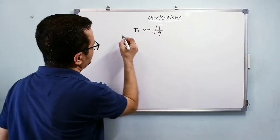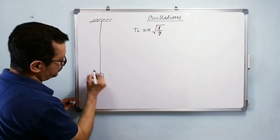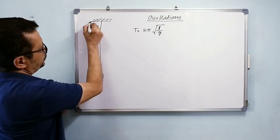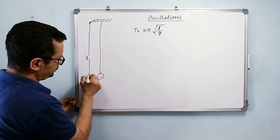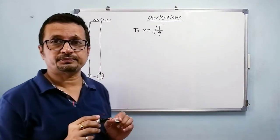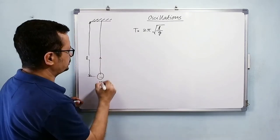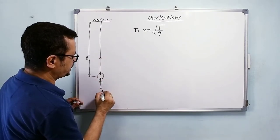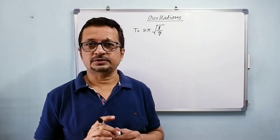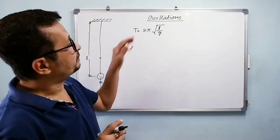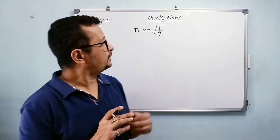Where this L is length of pendulum from this support to the center of mass of this ball. M is the mass, T is the tension, and mg is the weight of pendulum acting vertically downwards.